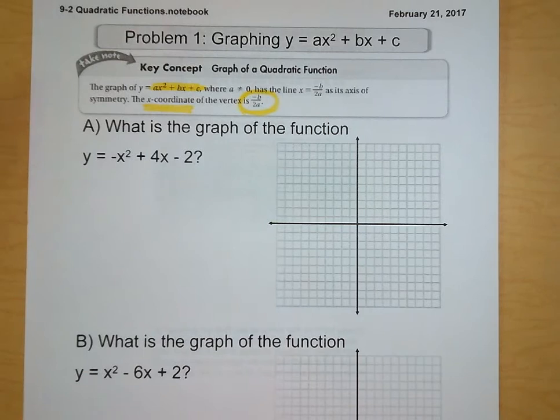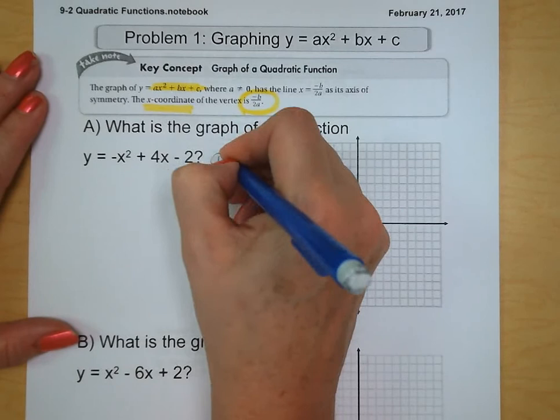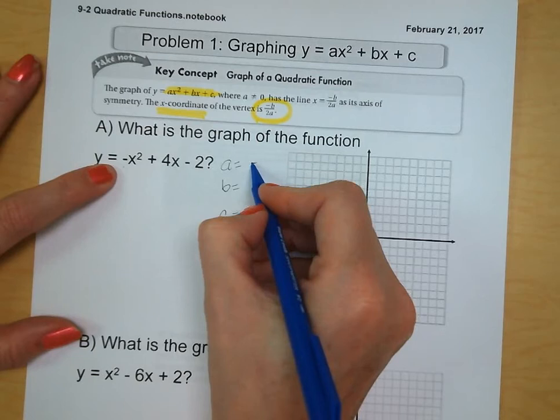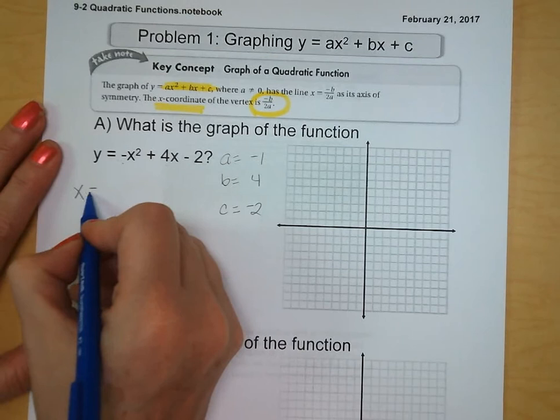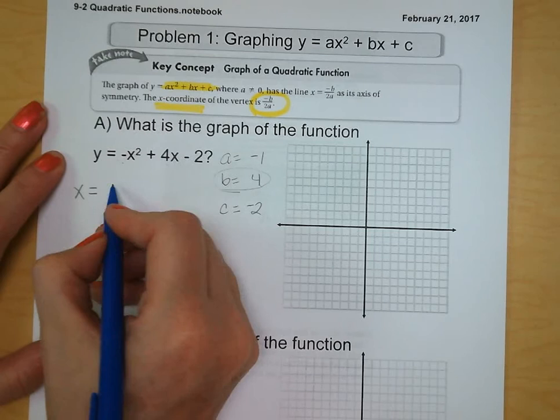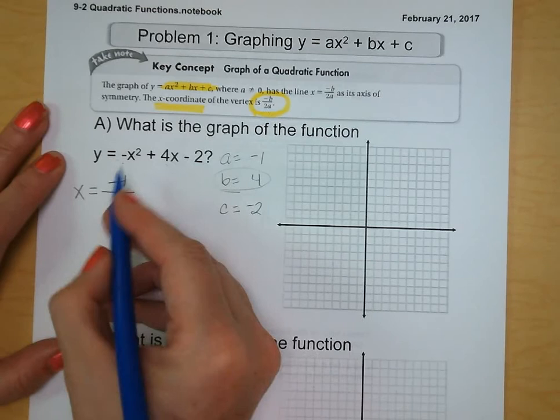So for question a, the opposite of b would be... our a value is negative 1, our b value is 4, and our c value is negative 2. So I'm looking for my x. I plug in the opposite of b, so b is 4, we take the opposite, it's negative 4, and I do 2 times whatever my a is.